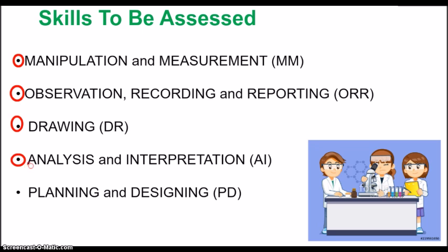The next skill is analysis and interpretation, which tests your use of knowledge. You'll need to identify trends, cause and effect, make calculations, state limitations, sources of error, conclusions, and modifications to methods. This also includes examining and interpreting graphs, taking measurements from data. Finally, planning and designing requires you to plan an experiment based on a problem or observation, construct a testable hypothesis, and plan how to investigate it.